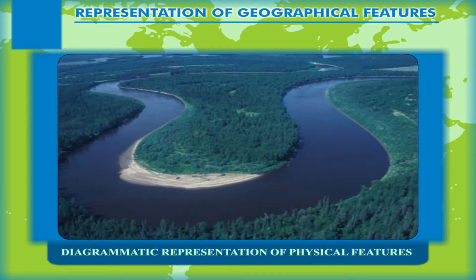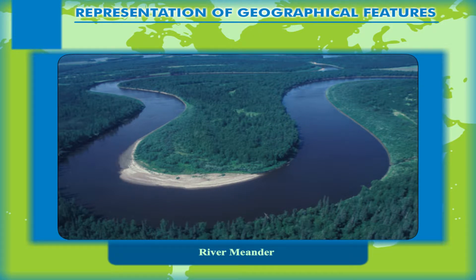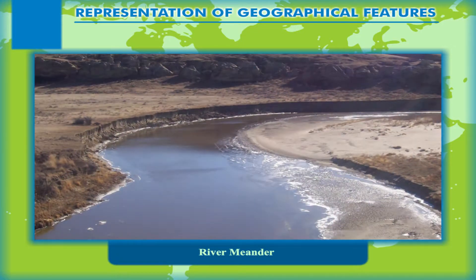Diagrammatic Representation of Physical Features. River Meander: A meander, in general, is a bend in a sinuous watercourse or river. A meander forms when moving water in a stream erodes the outer banks and widens its valley, and the inner part of the river has less energy and deposits silt.